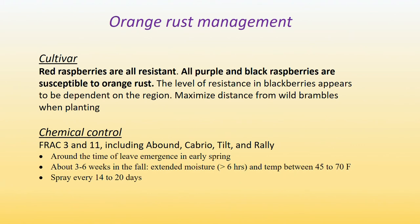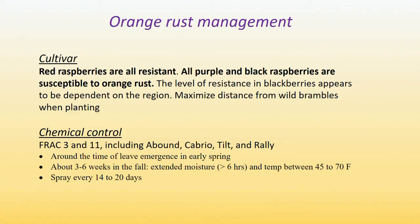Red raspberries are resistant to orange rust. Purple and black raspberries are susceptible. Maximize the distance from wild brambles when planting. For chemical control, FRAC 3 and FRAC 11 are effective if the disease has not been established. If the disease is already established, these two chemical classes will not do much. Apply those fungicides around the time of leaf emergence in early spring and three to six weeks in the fall, as infection happens twice — during spring and during fall. Favorable conditions are extended moisture and temperatures between 70 to 75°F. Spray every 14 to 20 days.